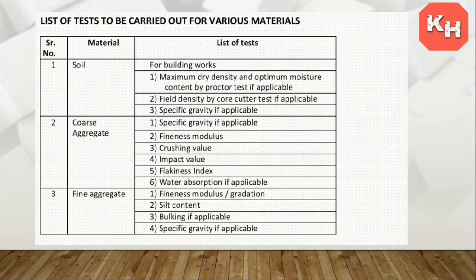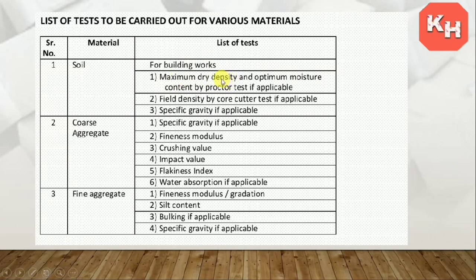Now we will see the table list of tests to be carried out for various materials. First is soil. For soil, the tests required for building work are: Maximum Dry Density (MDD) and Optimum Moisture Content (OMC) by Proctor Test; Field Density by Core Cutter; and Specific Gravity.